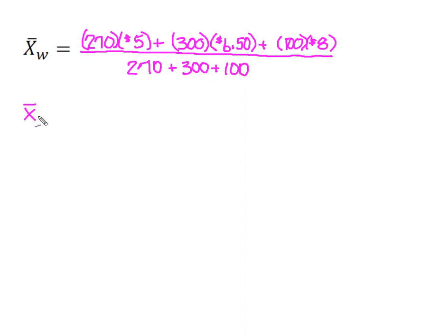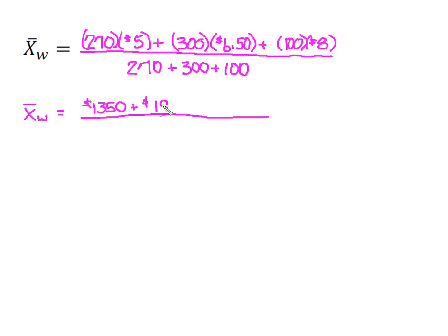So I'm going to start reducing my fraction. When I multiply 270 times $5, I get $1,350. Multiplying the 300 bushels times $6.50 gives me $1,950. And 100 bushels at $8 a bushel gives me $800. Adding up my weights in the denominator gives me 670.